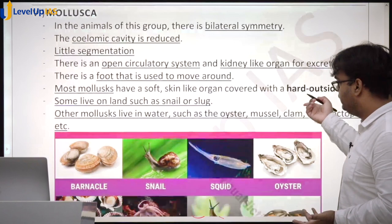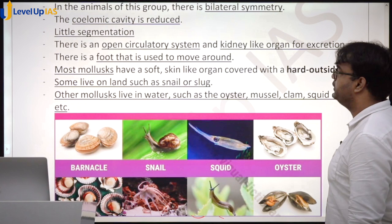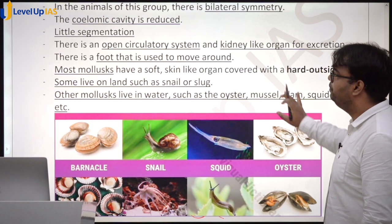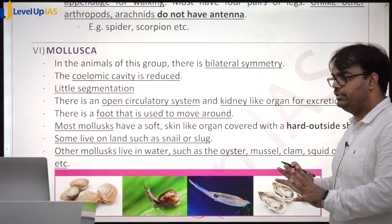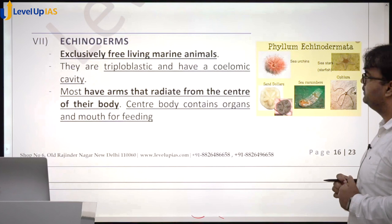Mollusca have a hard outside shell. Examples include snail, squid, and oyster, all grouped in the Mollusca category. The coelomic cavity is reduced and there is very little segmentation in this group.